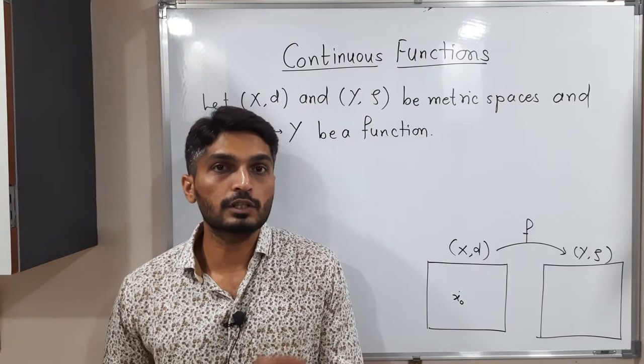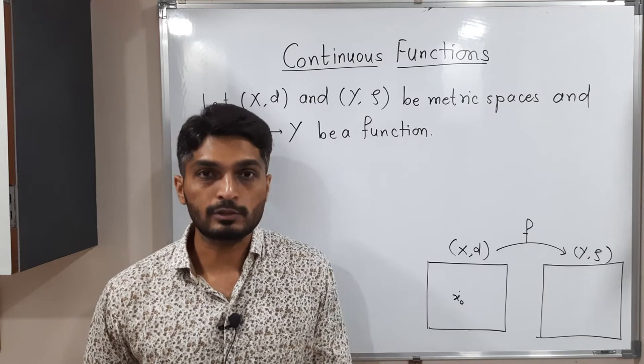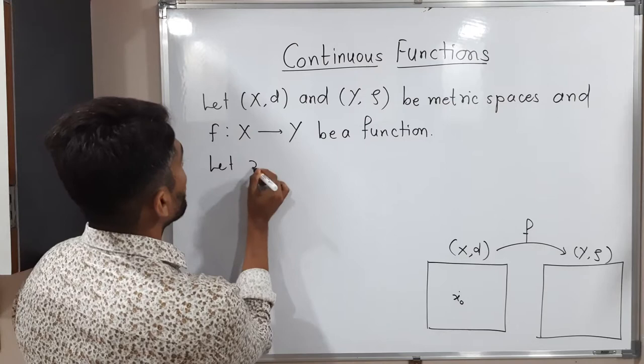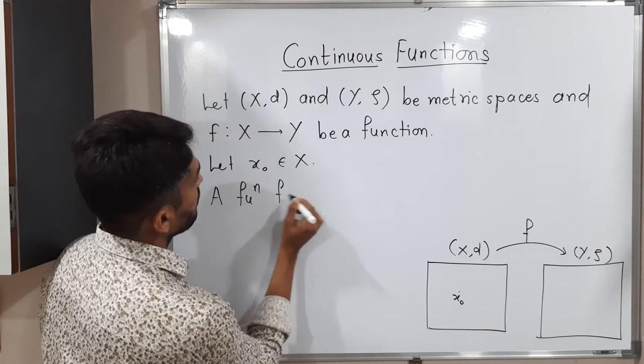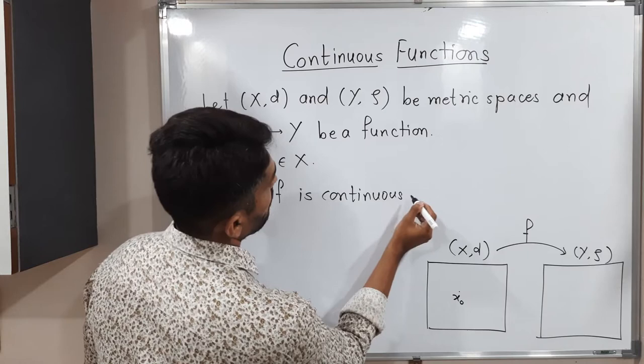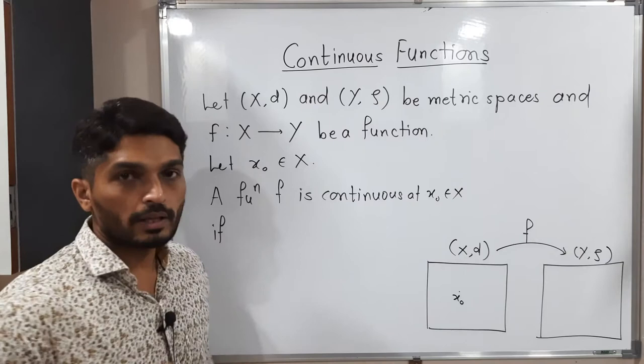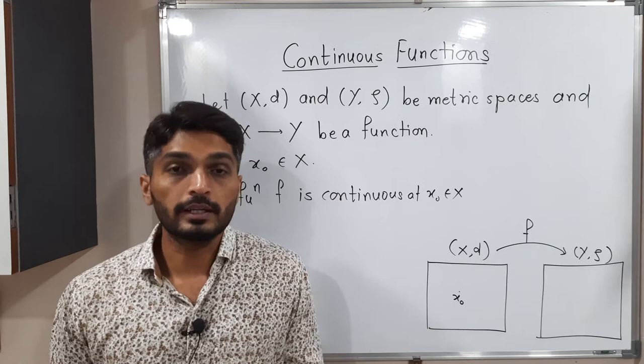I have already taken one point x₀ belonging to capital X. We say the function F is continuous at x₀ belonging to X if the epsilon-delta definition is satisfied — the same definition which you have already studied for real-valued functions. We simply use d and ρ which are metrics here.